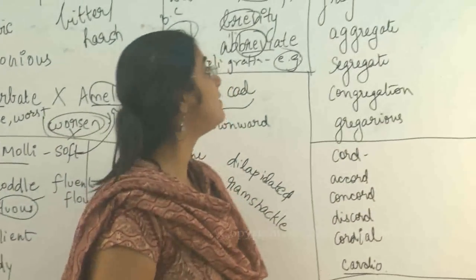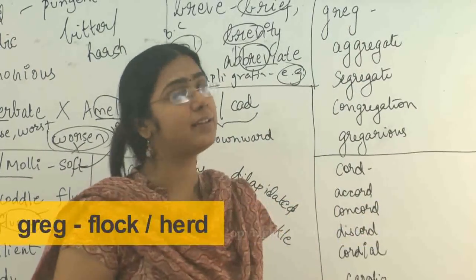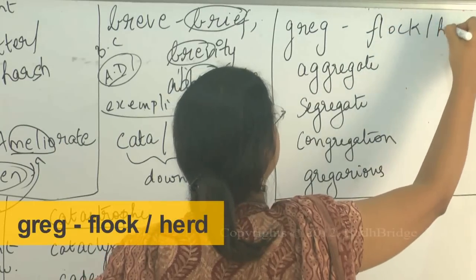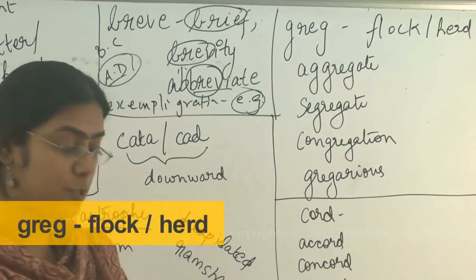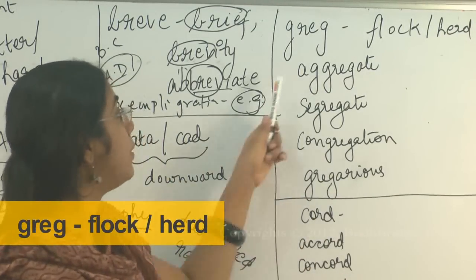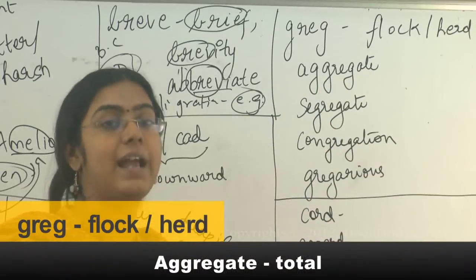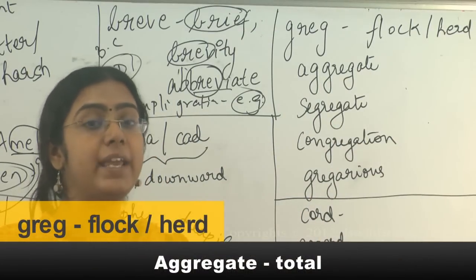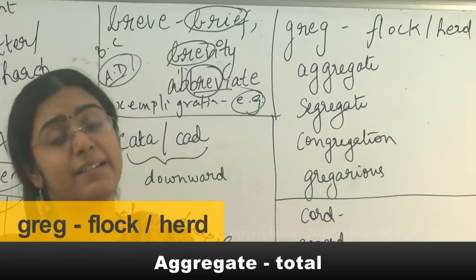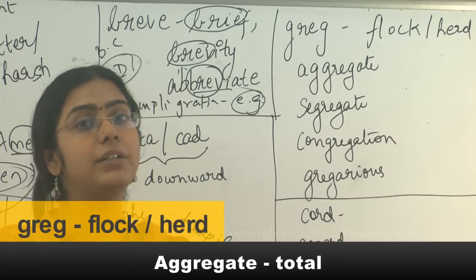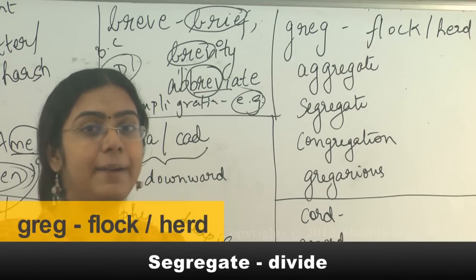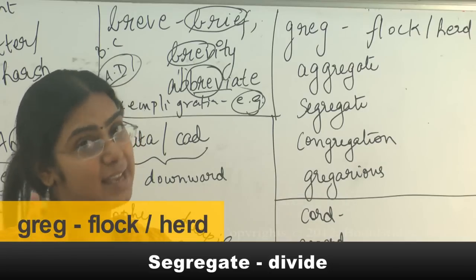The root word 'greg' means flock or herd — a herd of cattle, a flock of birds, a group. From this you get aggregate or aggregation, which means combined. So 'what is your aggregate score across six subjects?' means I'm asking for the combined score. Segregate means to classify and put things into groups.